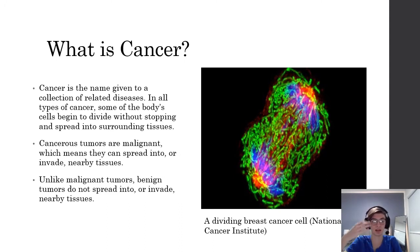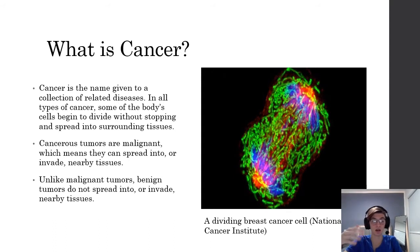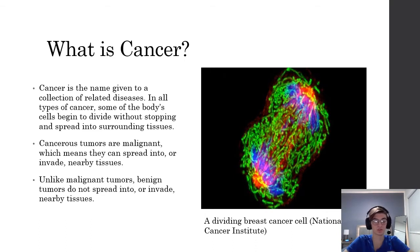Cancerous tumors are malignant, which means that they can spread into other tissues. That's the big difference between a cancerous tumor and a benign tumor. Cancer cells differ from normal cells in many ways, which allows them to grow differently. The massive difference is that a malignant tumor can spread, whereas a benign tumor is just a big mass of cells that you can remove with procedures like surgery.